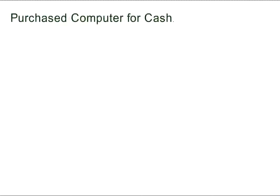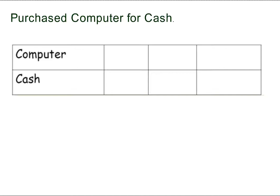Let's look at this transaction. You have purchased a computer for cash. Think: which accounts have been affected by this transaction? The two accounts affected are computer and cash. Think: what kind of accounts are they? They are both asset accounts.